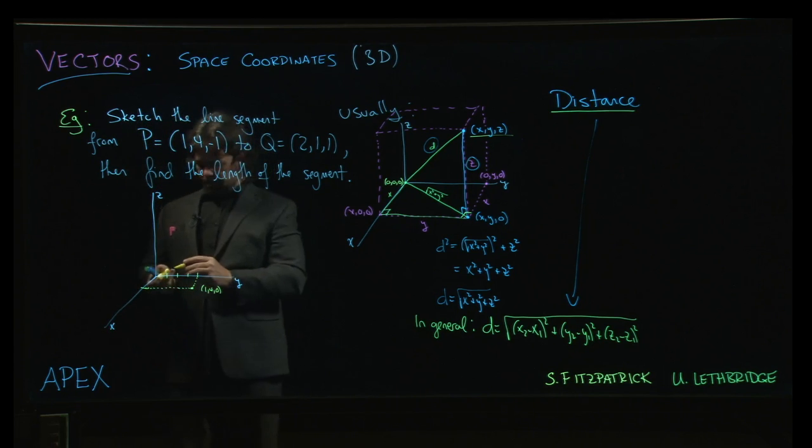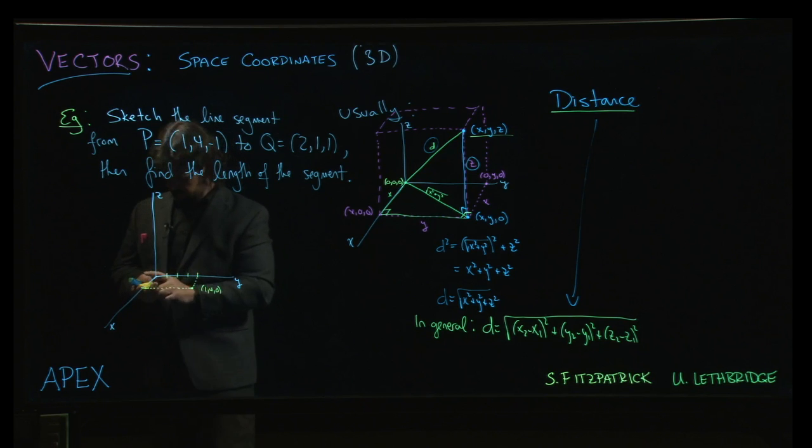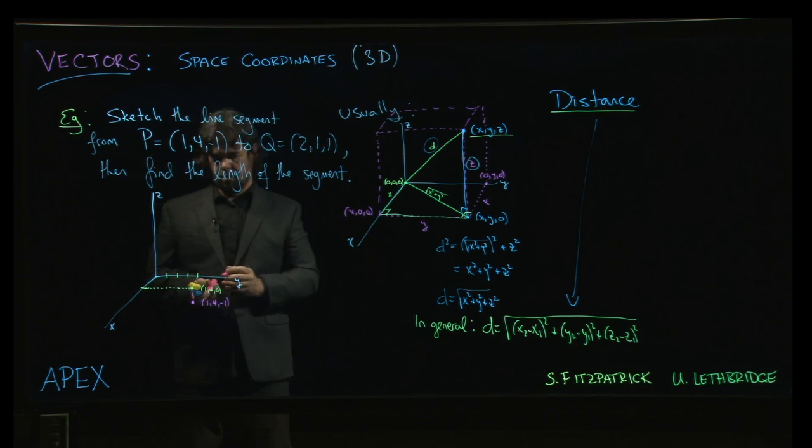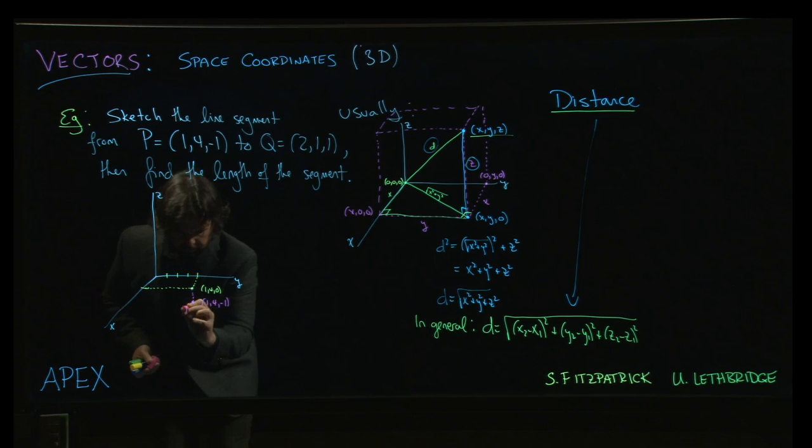And then we've got to drop down one unit in the z-direction. So we just kind of, let's think about just doing this. Okay, so drop it down one point. And there's one for negative 1. Okay, so that's our point P.